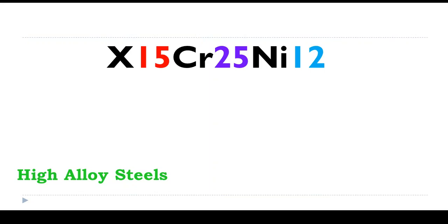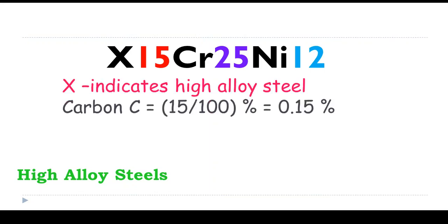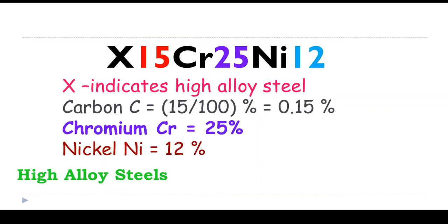X15Cr25Ni12: X indicates high alloy steel, 15 divided by 100 is 0.15% carbon. Chromium is 25%, nickel is 12%.